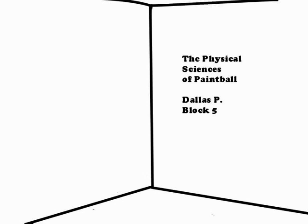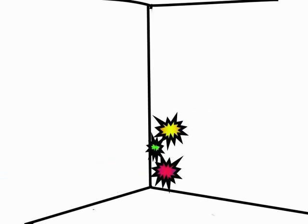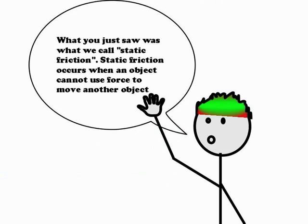The physical sciences of paintball. What you just saw is what we call static friction. Static friction occurs when an object cannot use the force to move another object.